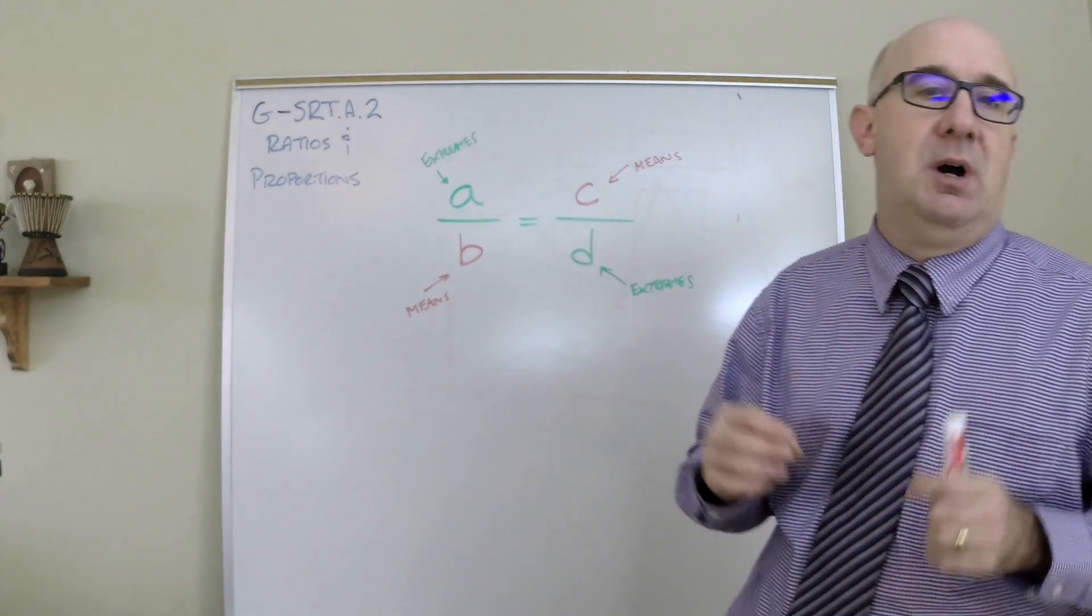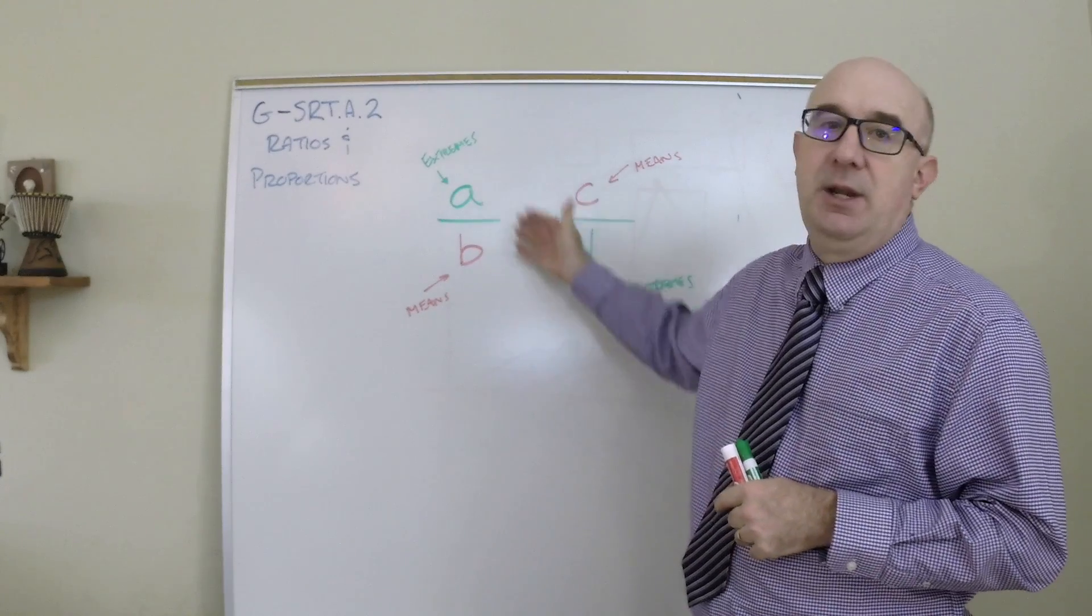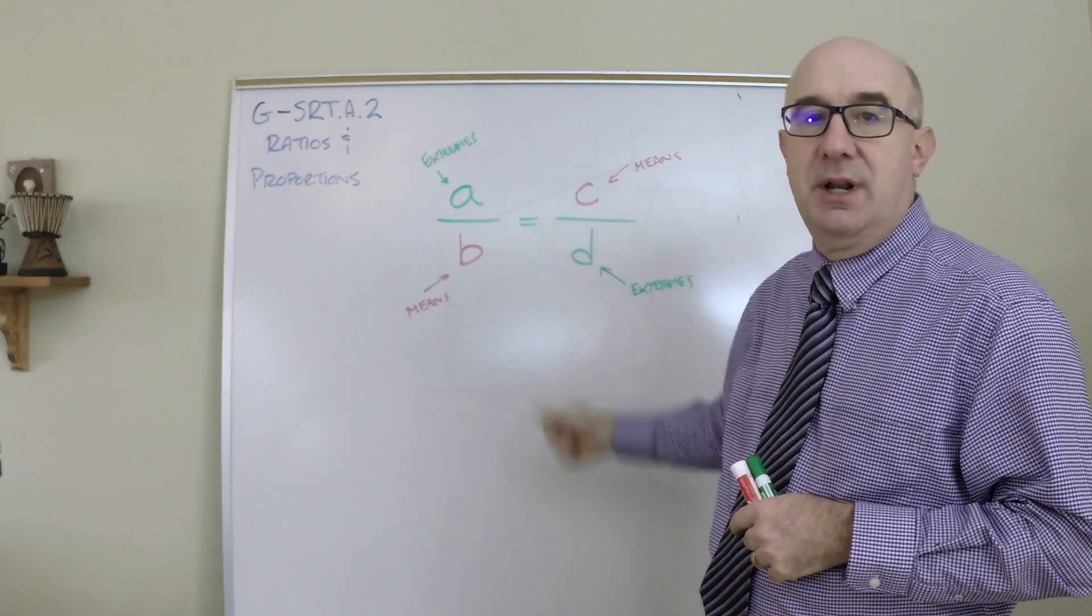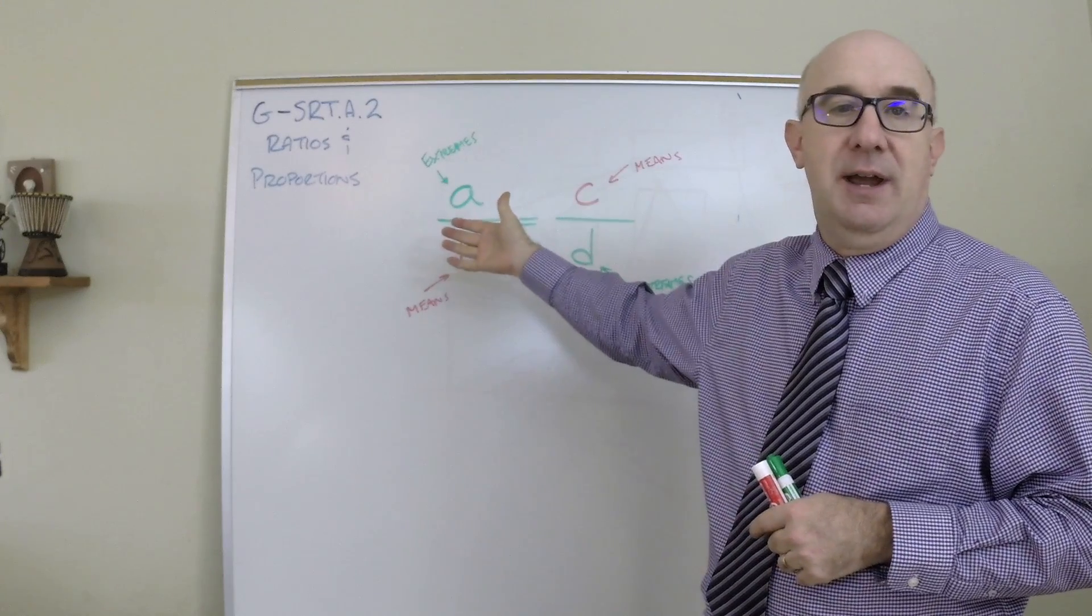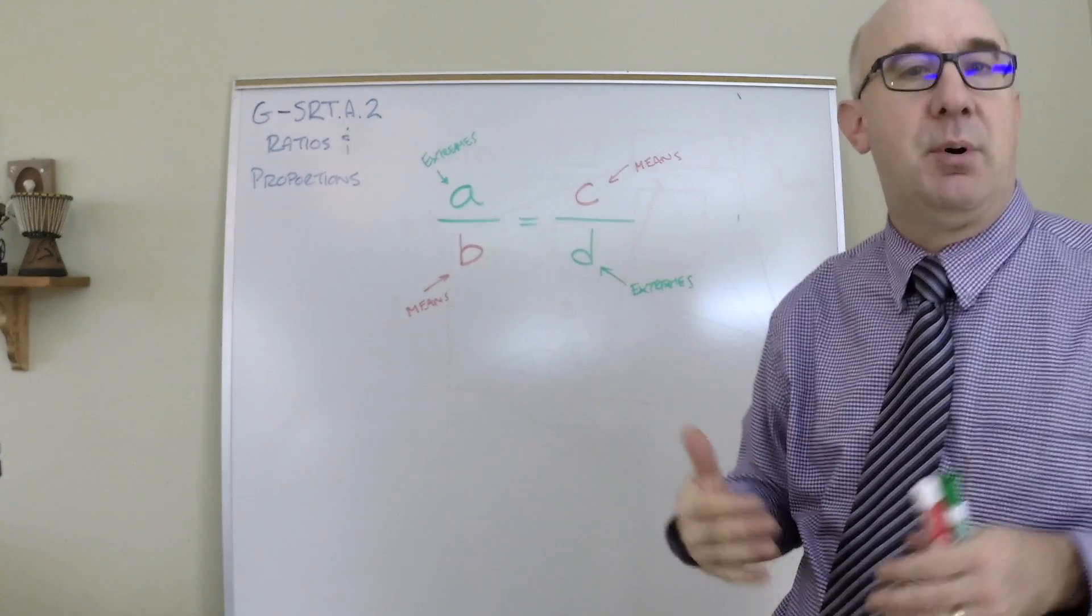But the key to a proportion is basically the equating of two ratios. In other words, the ratio on the left is equal to the ratio on the right. That becomes a proportion.